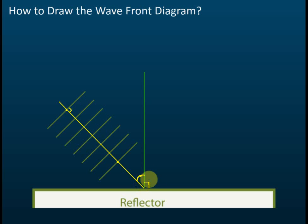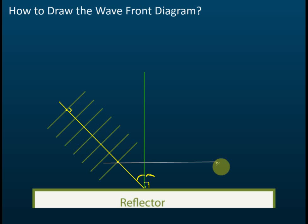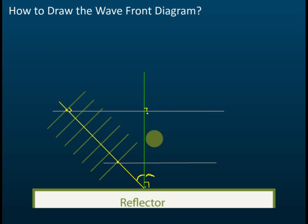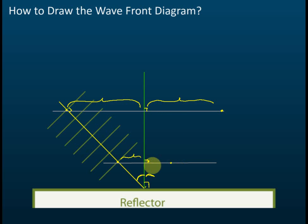If you have a protractor, measure the angle of incidence and then mark the same angle on the other side, and draw the reflected ray lines. If you don't have a protractor, draw reference lines at 90 degrees, measure the lengths on each side, and put marks at the same lengths.